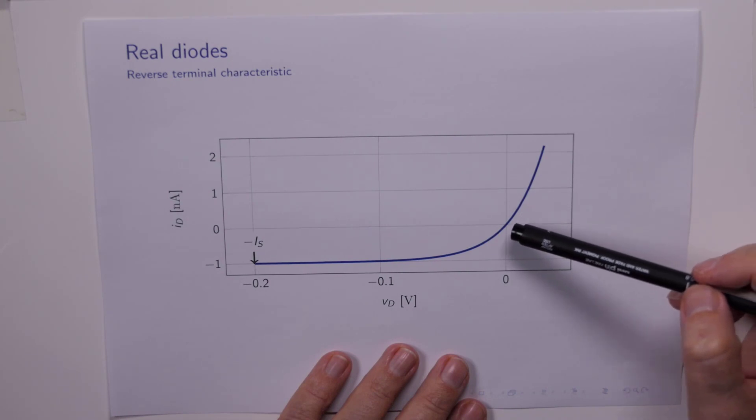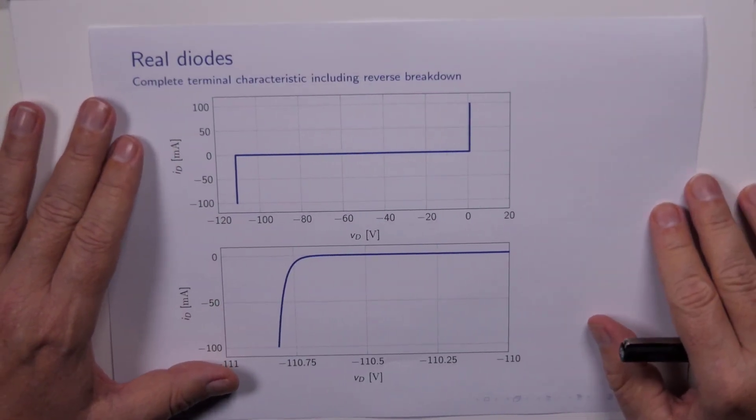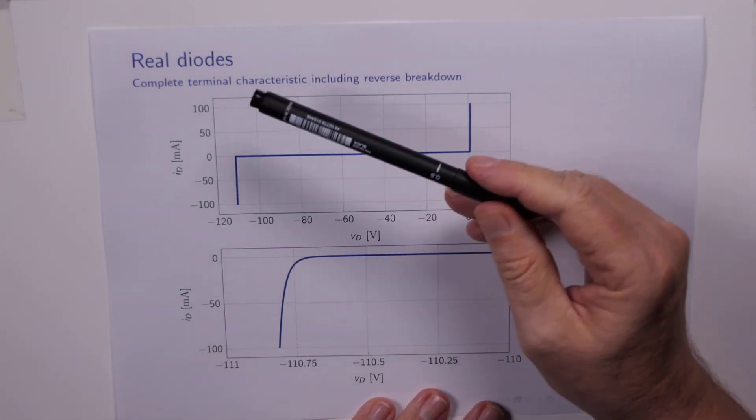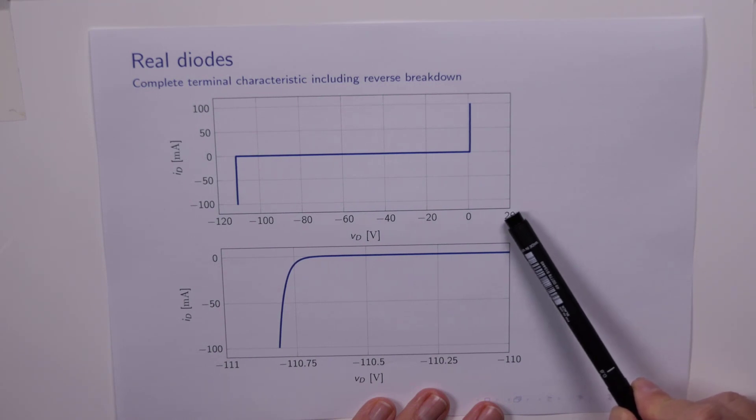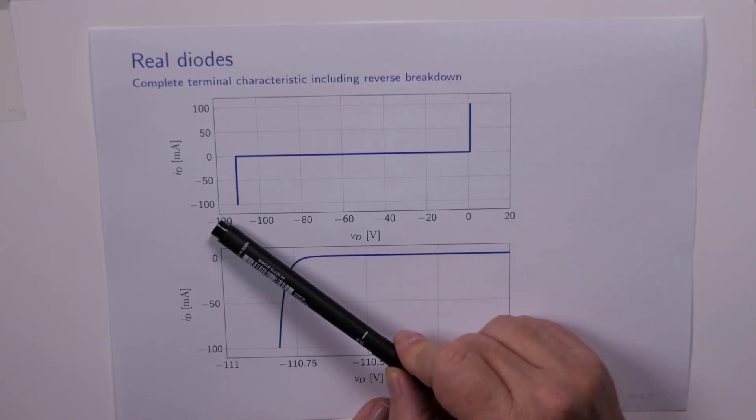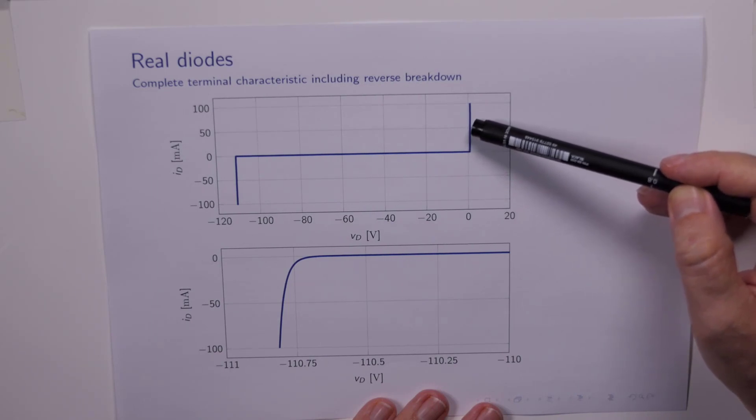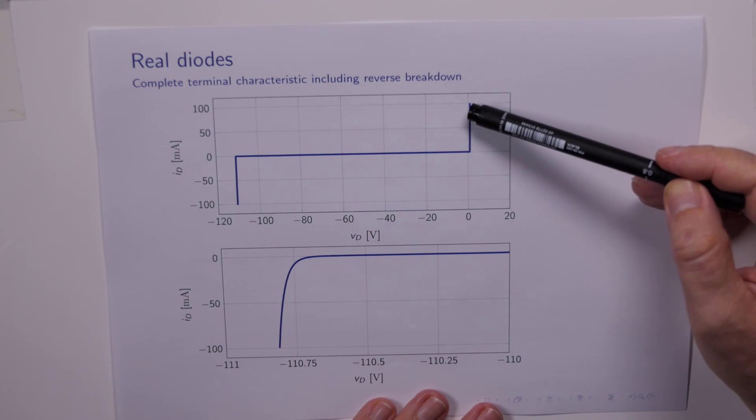But we're looking sort of microscopically at the behavior of the diode here. If we were to zoom out and have a more bird's eye view, we'd see a slightly different picture. Here's the real diode now plotted on a larger scale. The current now we're back to milliamps, going maybe up to plus or minus 100 milliamps. The voltage is on a much larger scale. Here's 20 volts going down to minus 120 volts. If we look very closely at this, you can see that vertical line is just to the right of the line VD equals zero. So that's our 0.7, 0.8 volt conduction happening there.